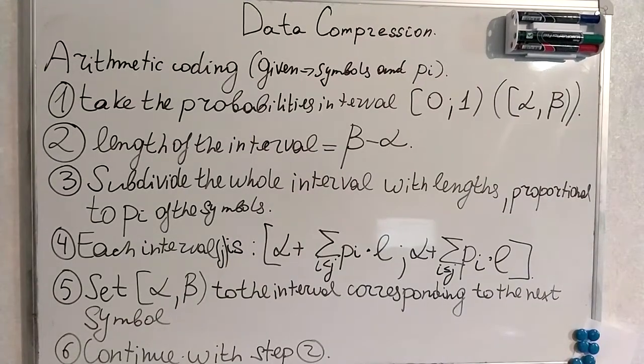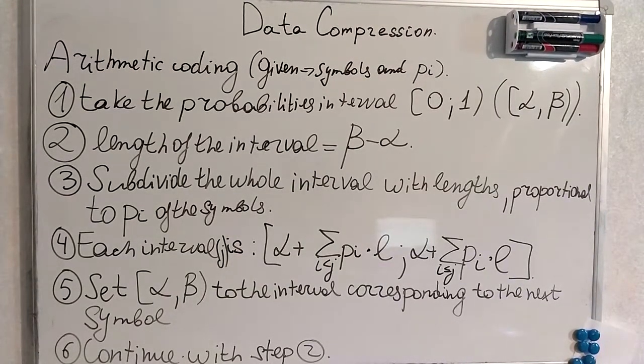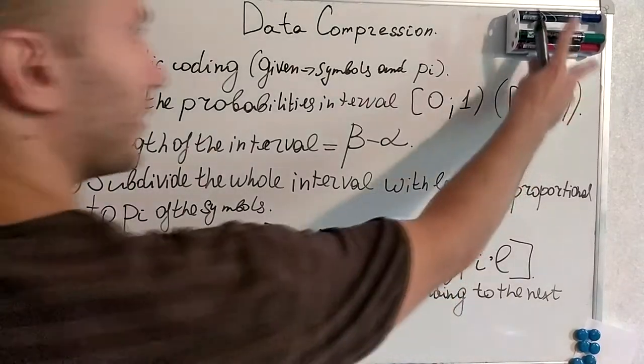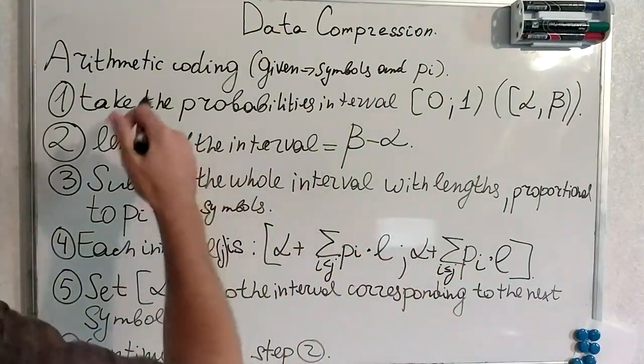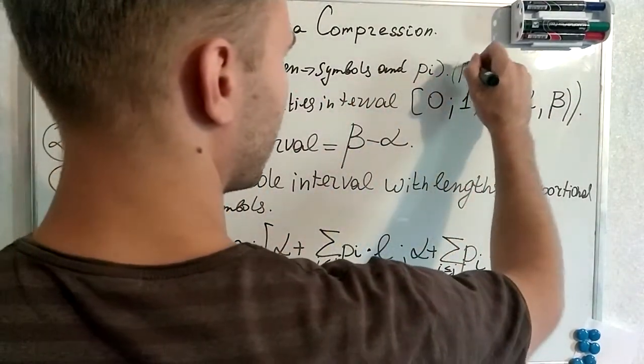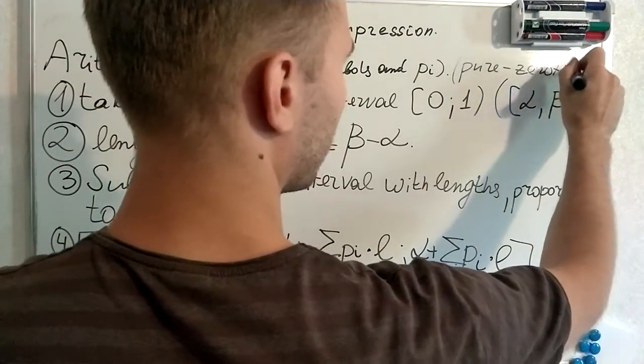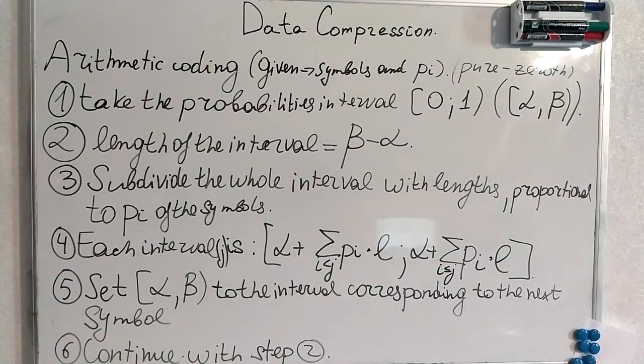Now we have come to the current state-of-the-art technique. It's called arithmetic coding. Actually this method is also called pure Zeres. This is pure Zeres arithmetic coding.